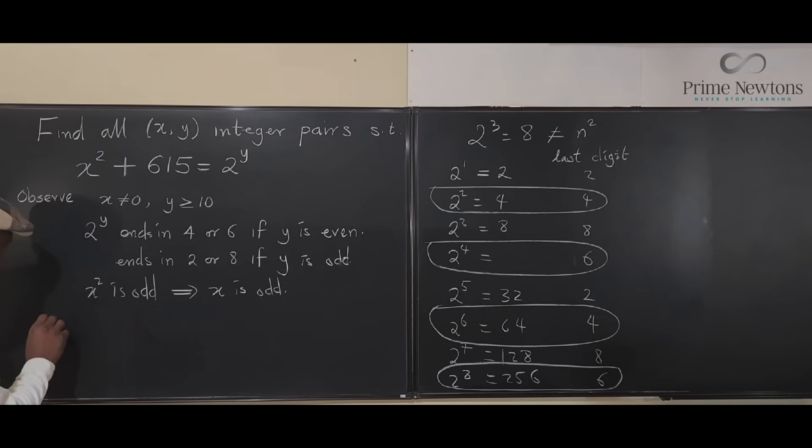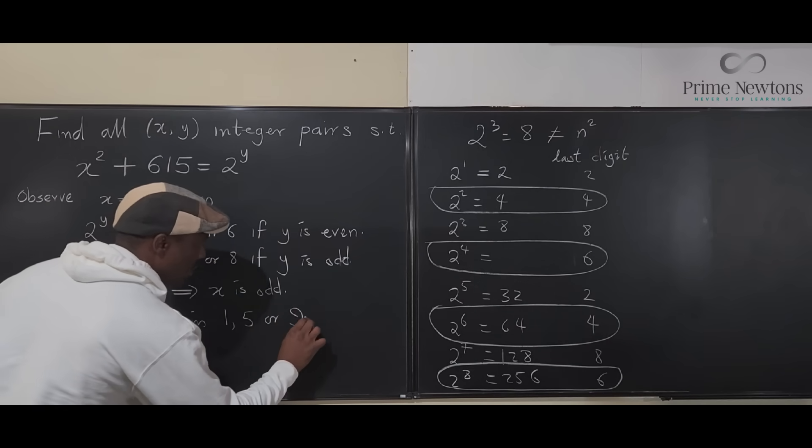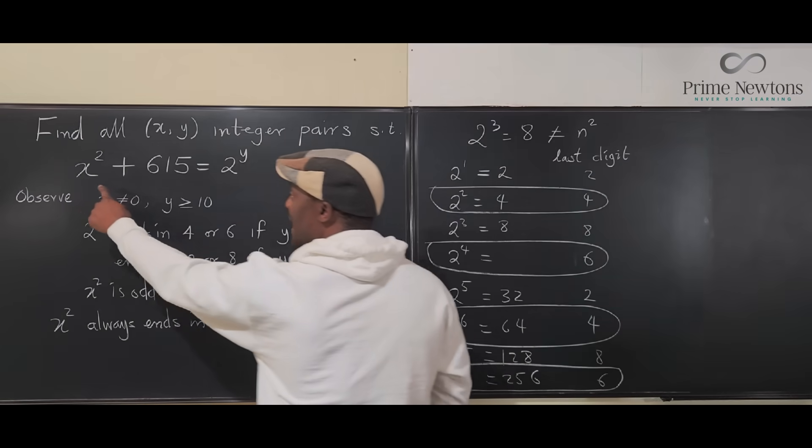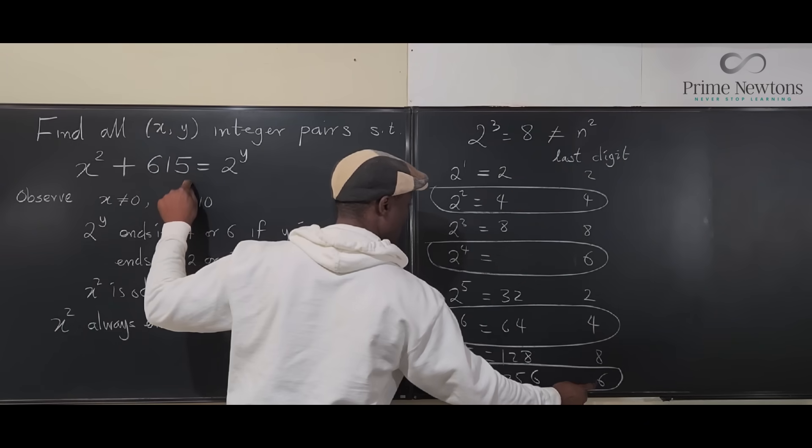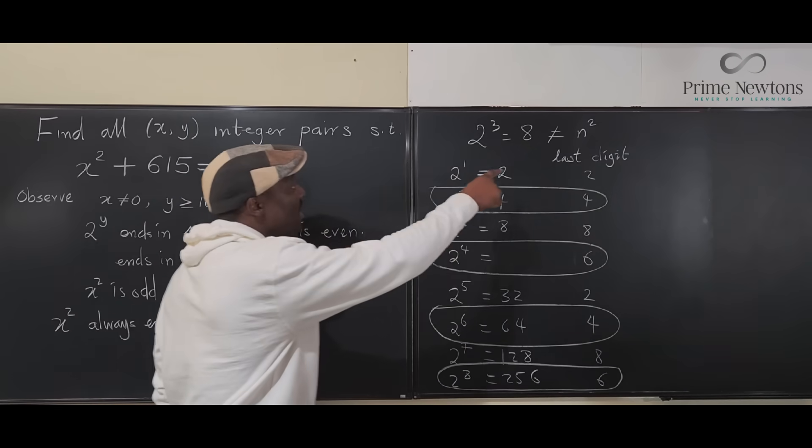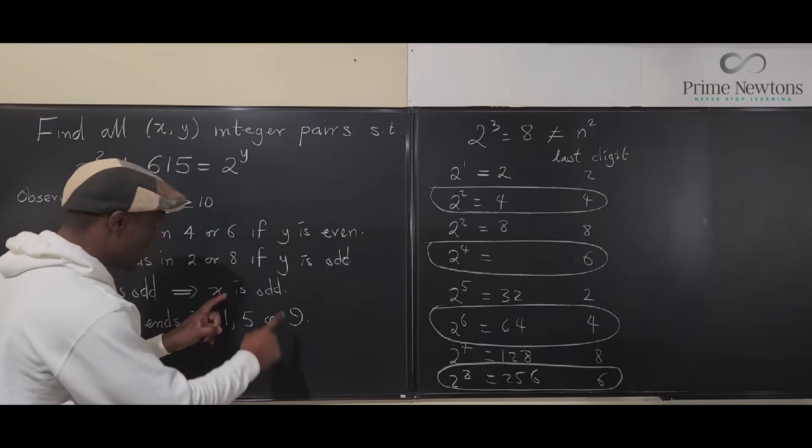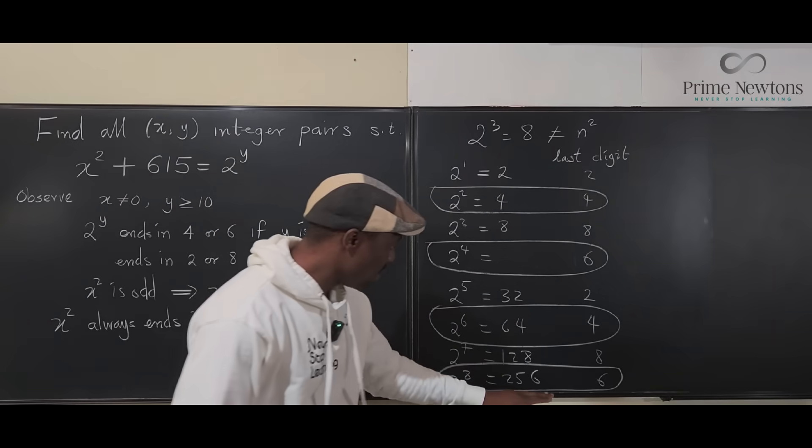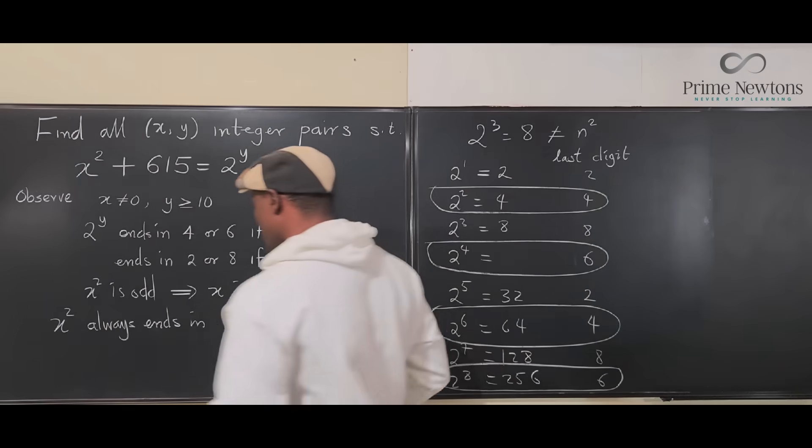And that's what gave me the key to the solution. So, x² always ends in 1, 5, or 9. So, what I'm saying is, if the last digit after adding an odd square, the square of an odd number, to 615, if it matches 4 or 6, then we are guaranteed that y is an even number. This guy is even. But if it matches 2 and 8, then we know it is odd. These are the options for the odds. These are the options, and then we're going to add it to 615.